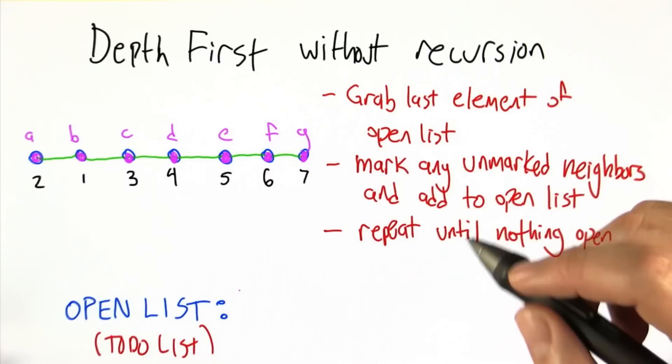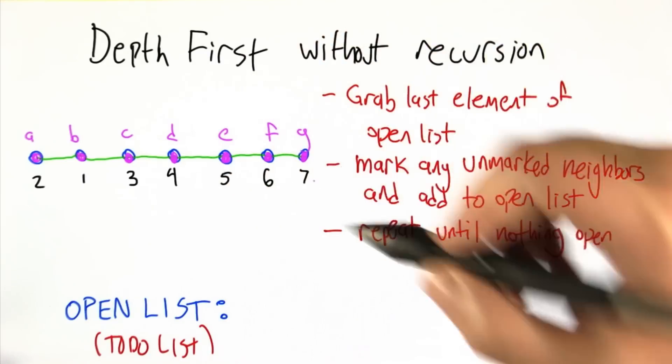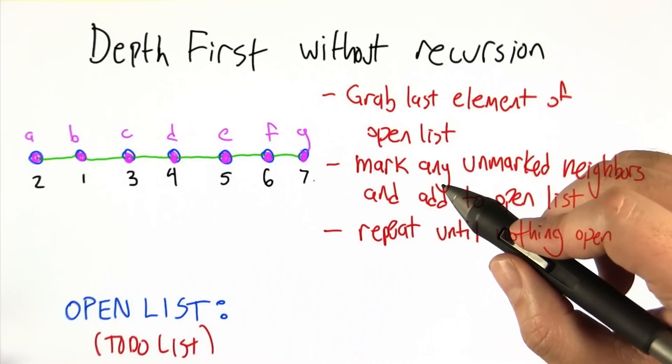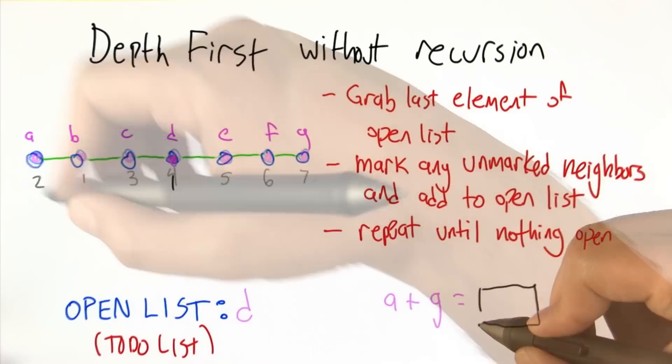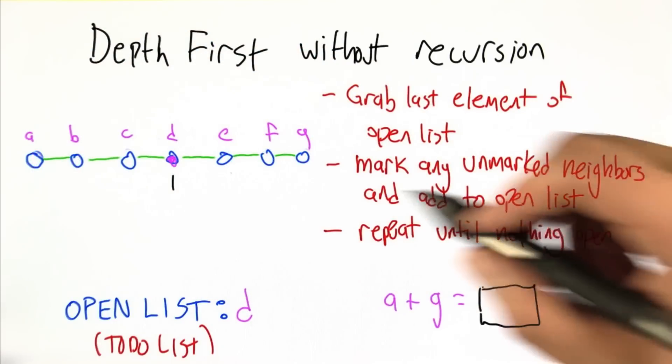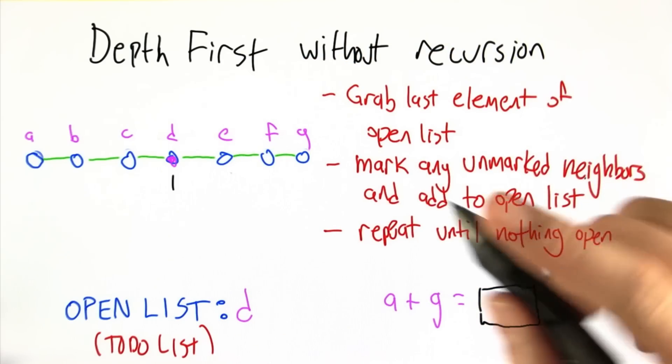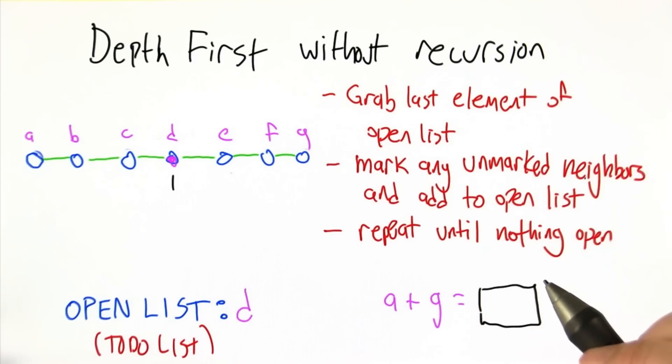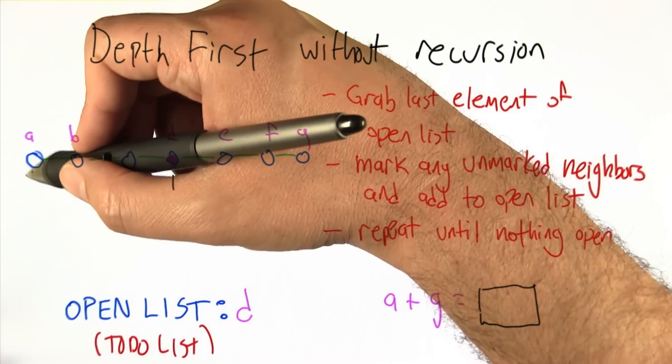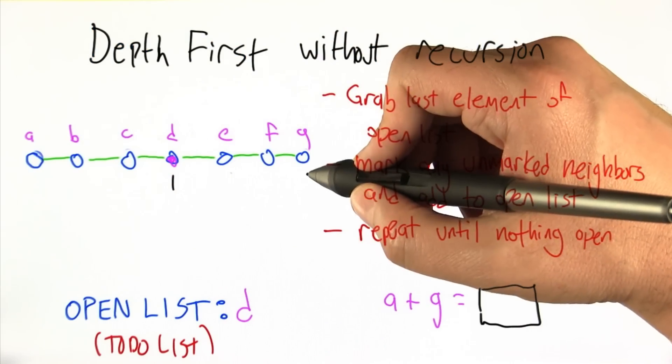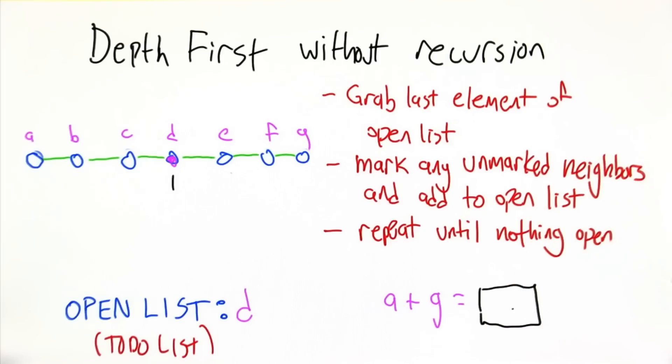So I want you to do this starting from D and make a note of the numbers as you add them. Let me clean this up. I want you to try this just like I did starting from D this time and write the numbers underneath. And when you're finished, when the search is completed, take whatever number you have under A, take whatever number you have under G, add them together and put it in this box here.